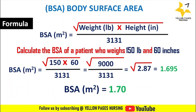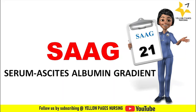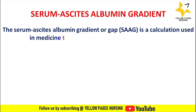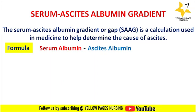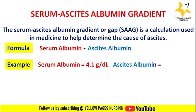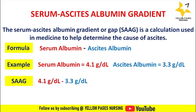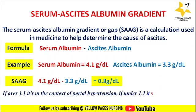Next comes serum ascites albumin gradient. The serum ascites albumin gradient, or SAAG, is a calculation used in medicine to help determine the cause of ascites. The formula is: serum albumin minus ascites albumin. For example, serum albumin is 4.1 g/dL and ascites albumin is 3.3 g/dL, giving a SAAG of 0.8 g/dL. A SAAG over 1.1 indicates portal hypertension context; under 1.1 suggests peritoneal causes.